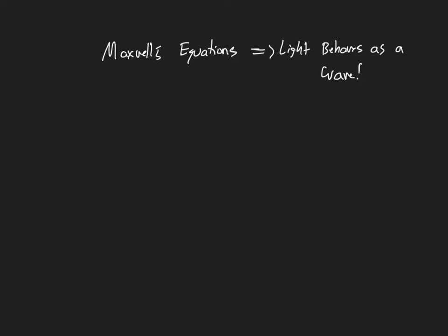Hey everyone, Professor Dustin here. In this video I'm going to show you how Maxwell's equations predict that light behaves as a wave. There are lots of reasons to believe that light behaves as a wave. Experimentally it was known basically in the early 1800s when Thomas Young did his double slit and other interference pattern experiments.